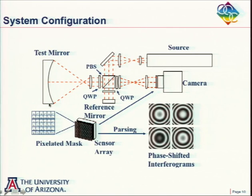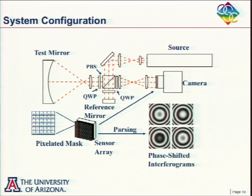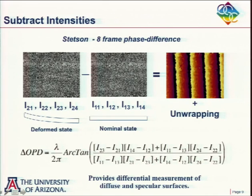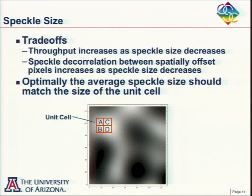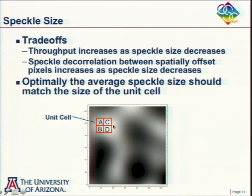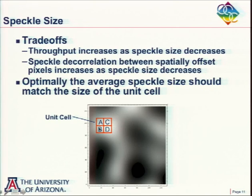Instead of testing a mirror, I'm putting some diffuse object there and measuring out the four intensity distributions. If I'm looking at a diffuse surface, the interferogram looks like a speckle pattern. If the speckles are too small, it's going to create trouble. We need to increase the speckle size so the speckles are larger than the unit cell — the four-polarizer group from which we obtain the phase variation.